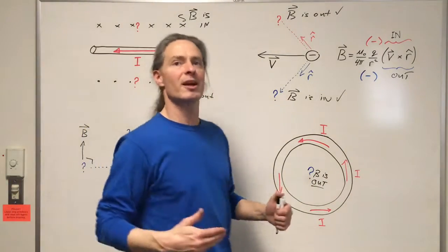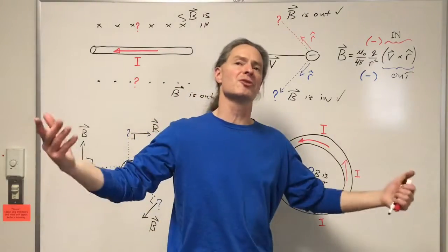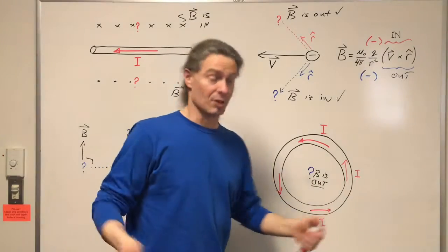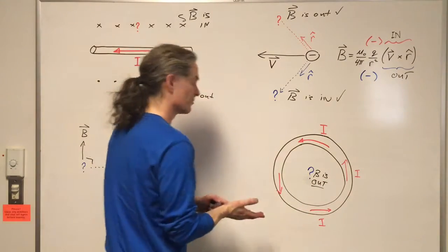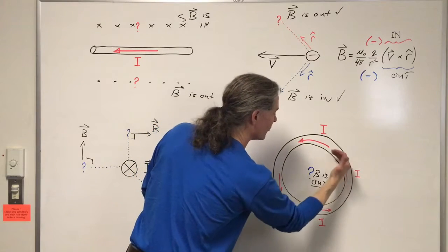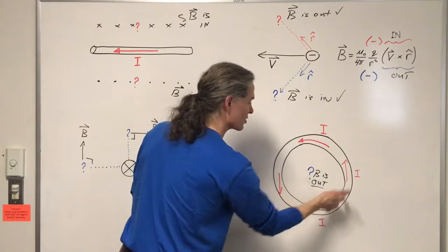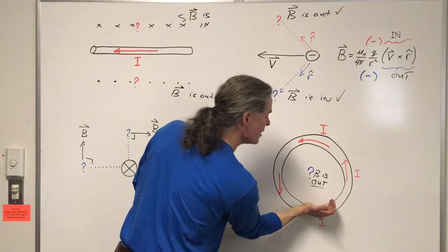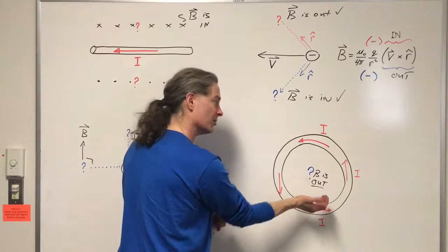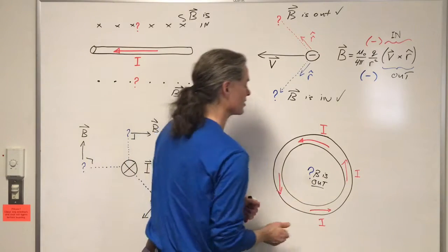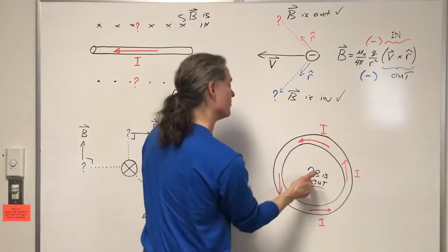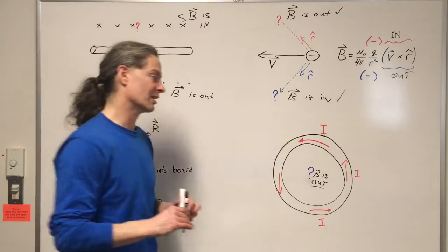There's another right-hand rule we can use — a special derived right-hand rule only for loops. This is optional, but here's how it works: you use the fingers of your right hand and curl them so they follow in the sense of the current. The current is going around this way, so have your fingers follow that. Your thumb will point in the direction of the magnetic field at the center of the loop. It's special just for the center of the loop. So that right-hand rule — thumb pointing out — agrees with the other way we calculated the direction of the magnetic field.